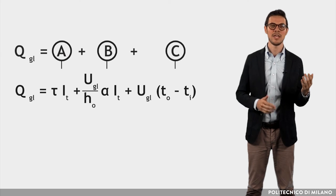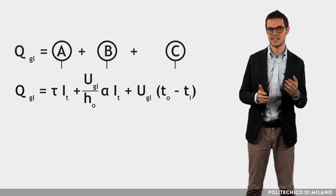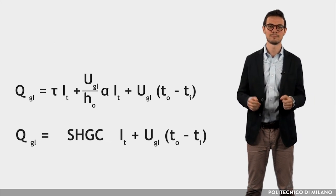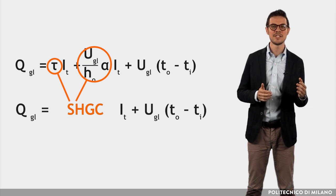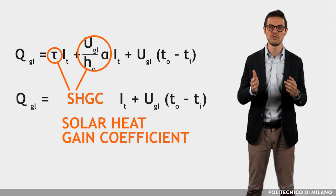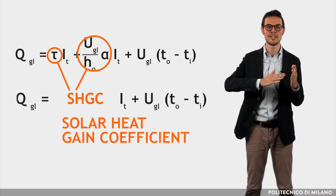Since the terms A and B are linked to solar radiation, while C exists even in its absence, the equation can be written in this way, where SHGC is the solar heat gain coefficient, characteristic of each type of fenestration, which varies with the incident angle.